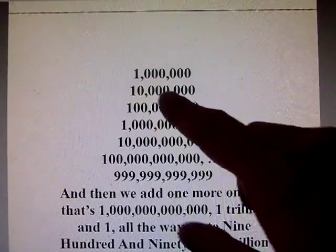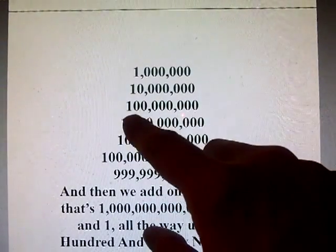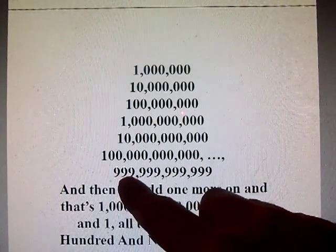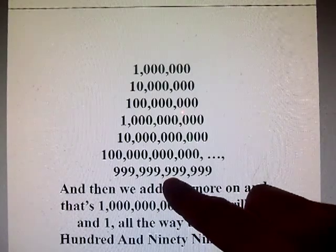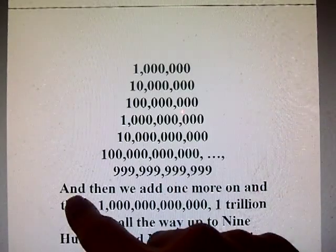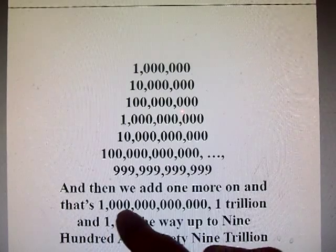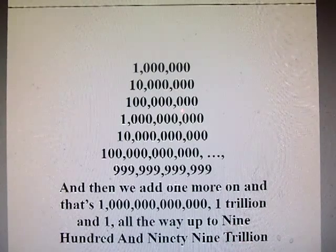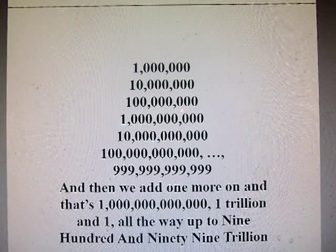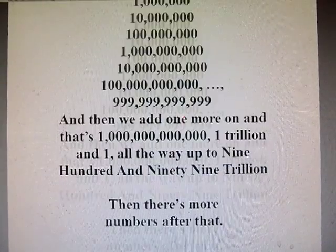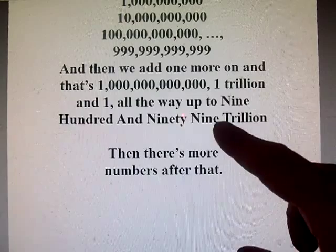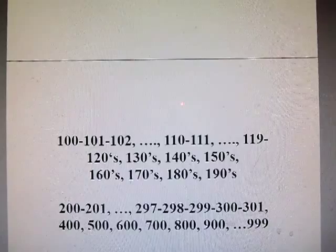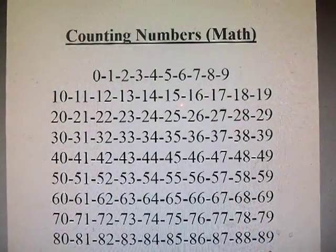Then we go to a million. Yeah, a million. And then 10,000,000, 100,000,000, and then 1,000,000,000. Then we add one more and that's a trillion — 1 trillion. There are more numbers beyond that, but yeah, that's counting numbers for math. Good job.